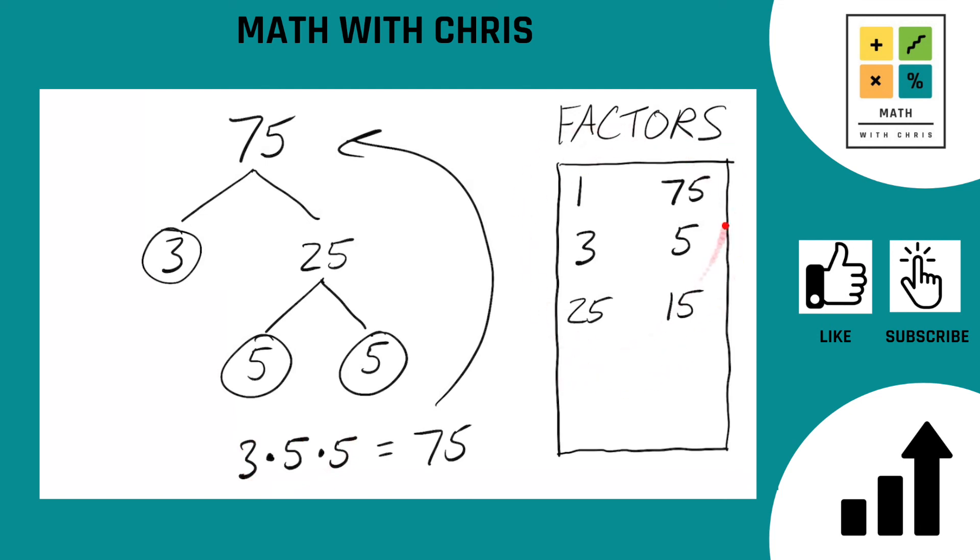There are 6 factors of 75. They are 1, 3, 5, 15, 25, and 75. That's it.